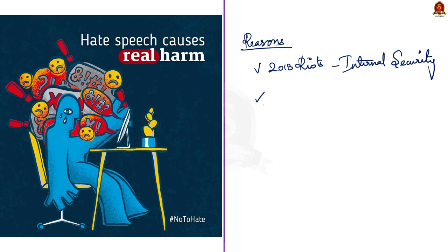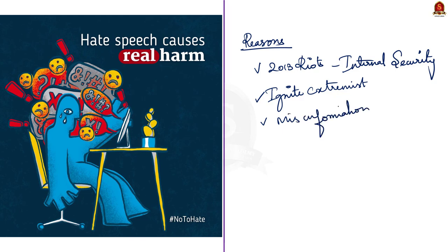The second reason hate speech must be curbed is that it ignites extremist sentiments. Third, to prevent mob lynching and the spread of misinformation and disinformation, curbing hate speech is very important. The Delhi riots are a clear example of misinformation and disinformation. In order to curb all these and to live in peace and harmony, hate speech must be curtailed.